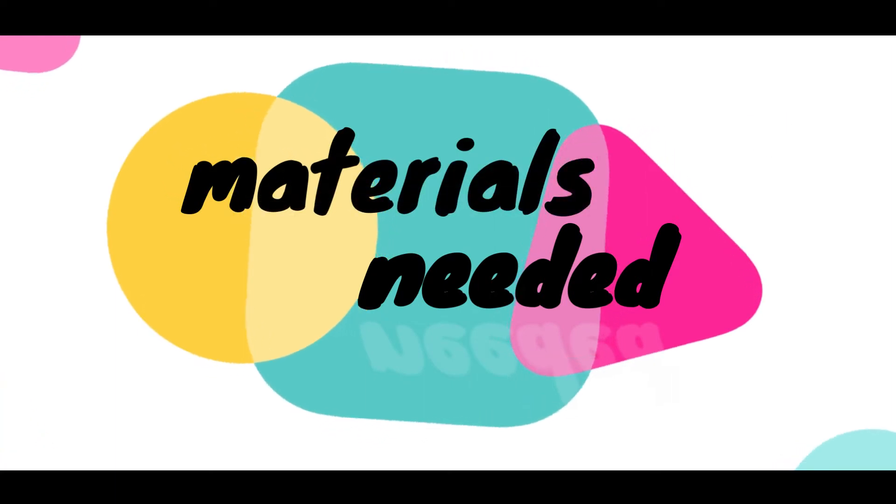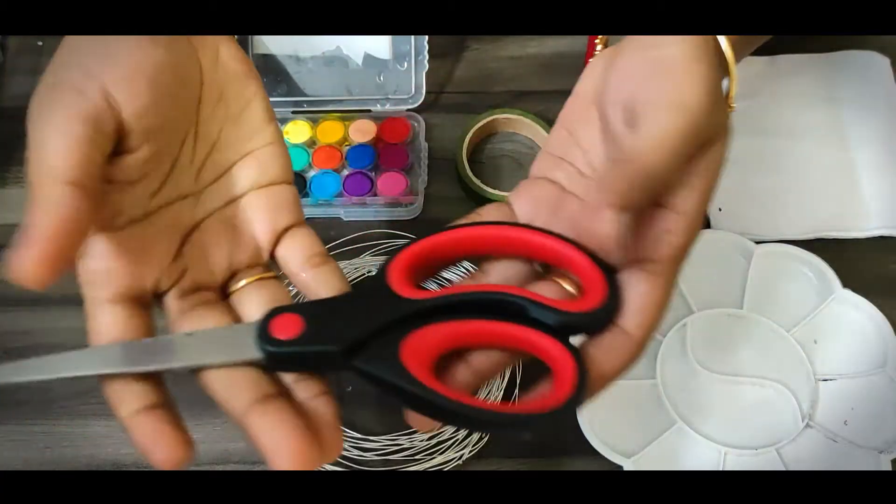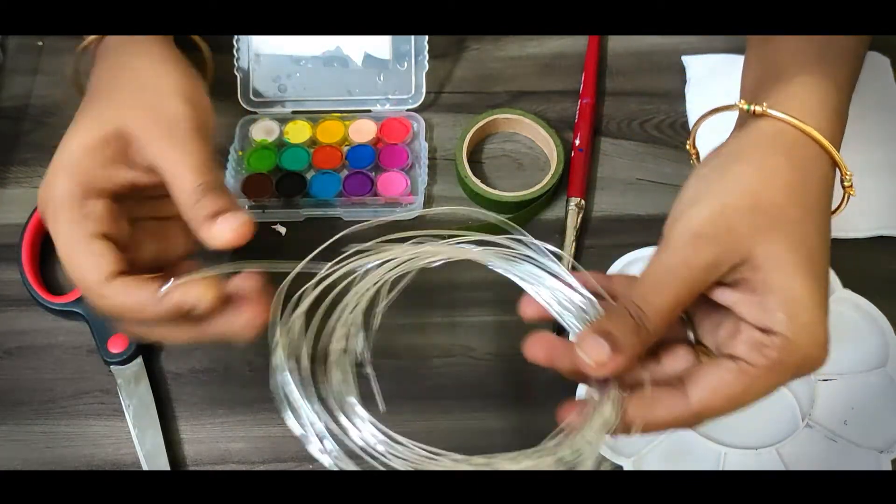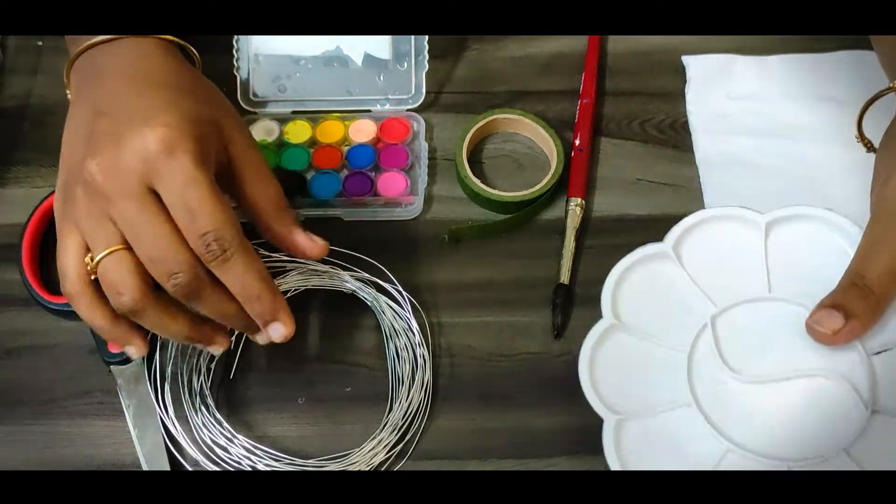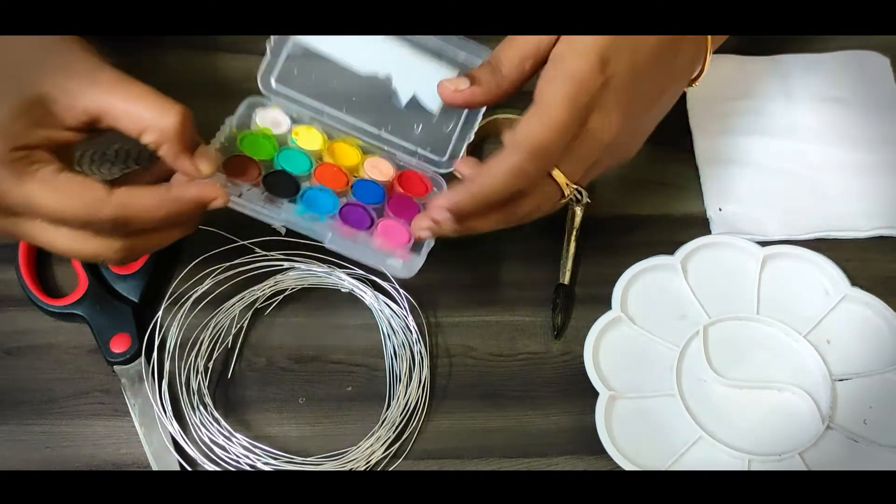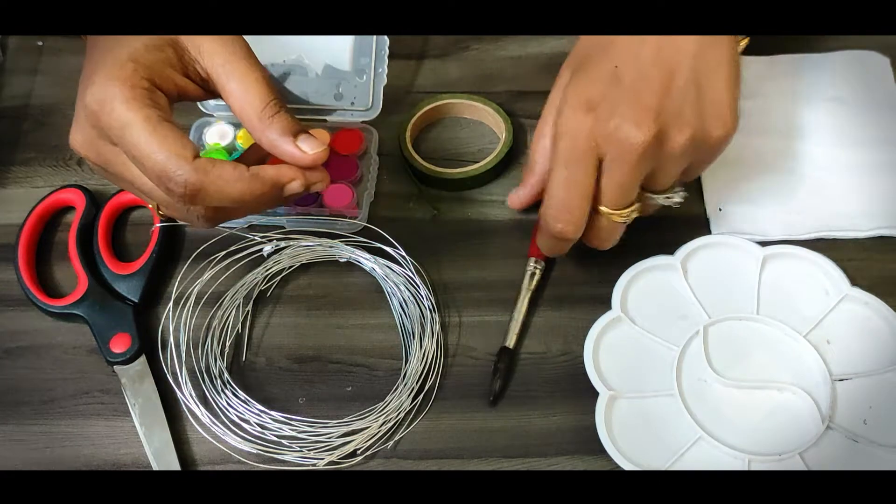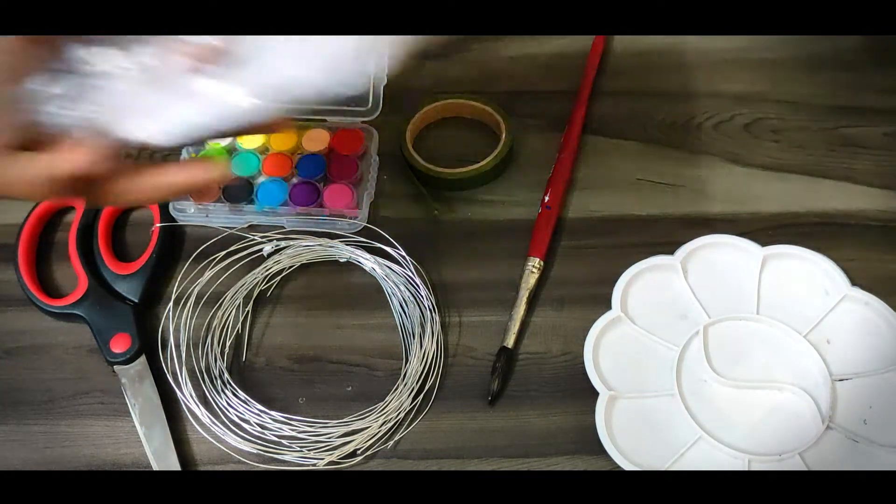Let's take the materials now. Take the first scissors, string, flower making string, palette, water color palette, green tape, brush, and tissue papers. Tissue papers are main.